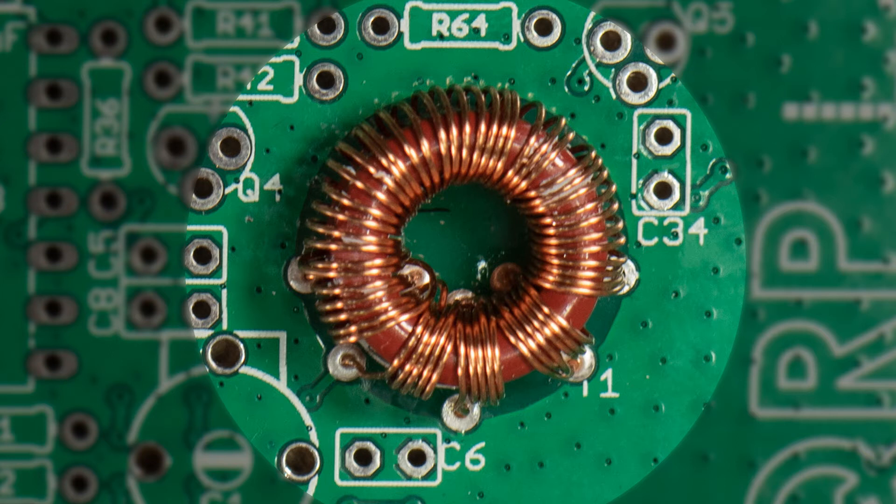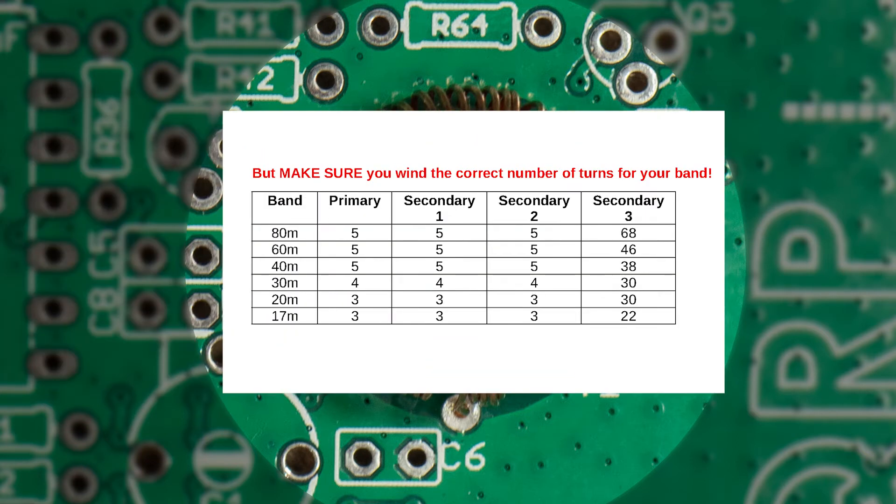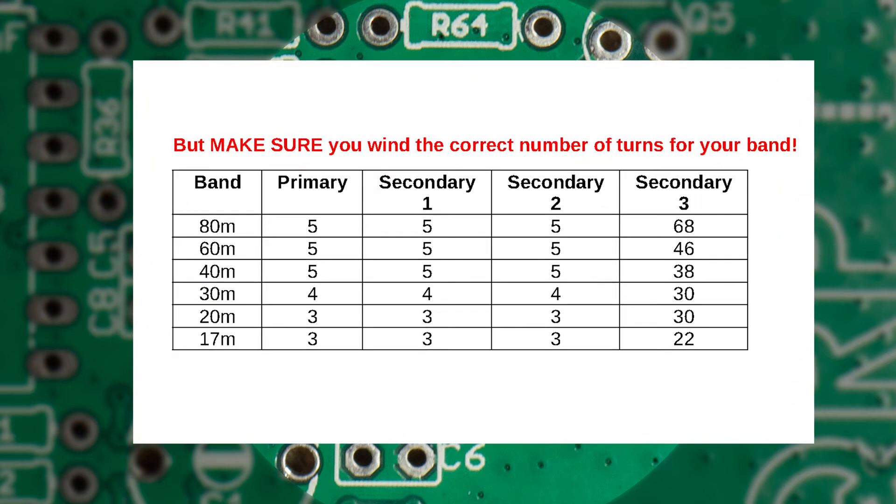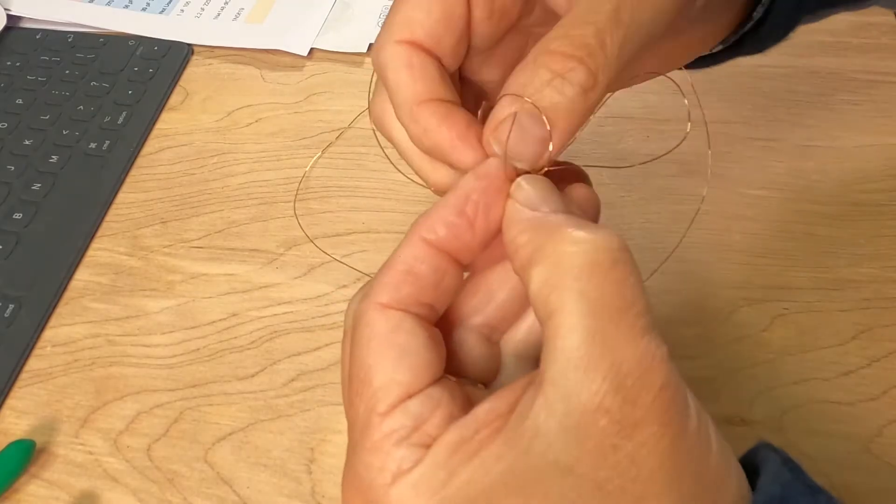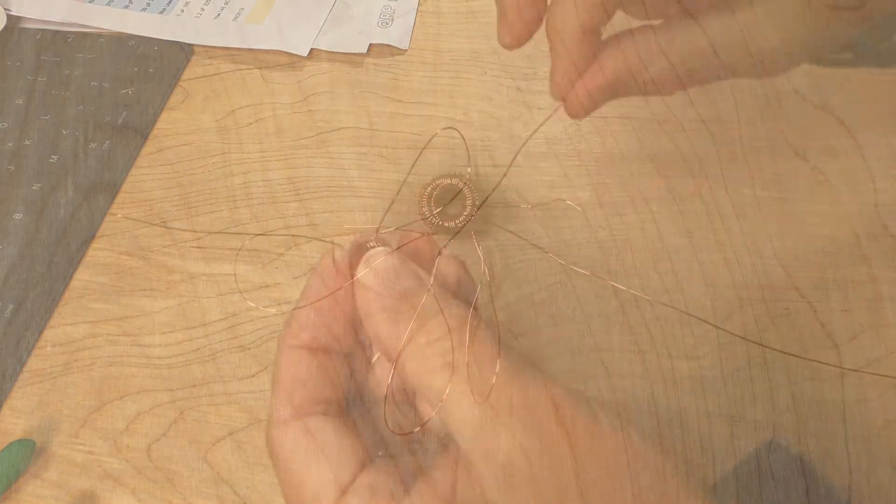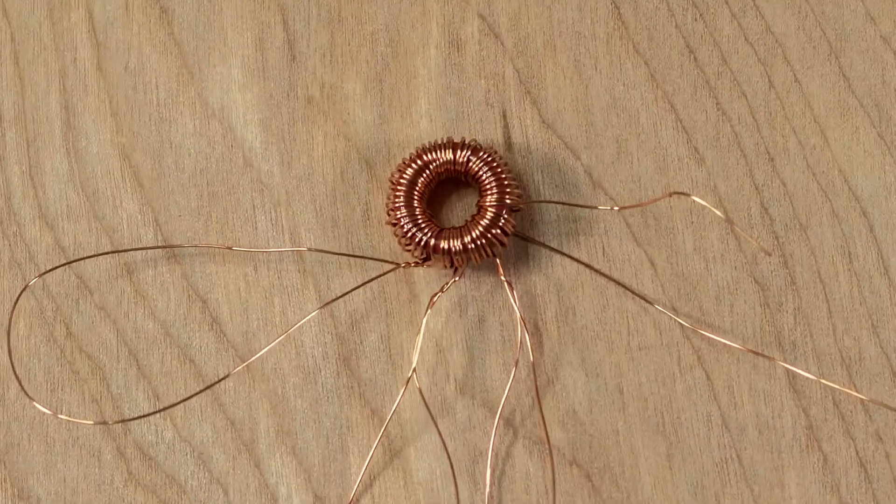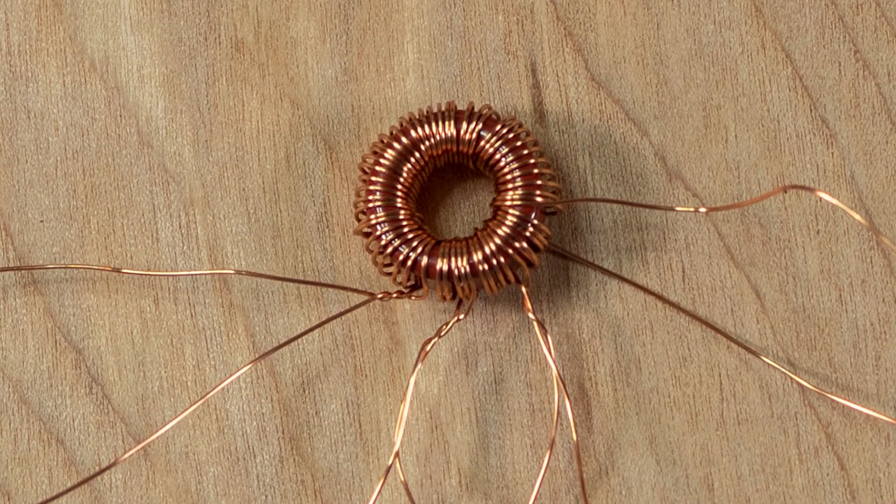Each band has a different number of turns, and for this 40 meter version of the kit there are 33 turns for the big coil plus three sets of five for the smaller ones. The instructions suggest winding all of them in one go using twisted loops to separate them, and that works well.